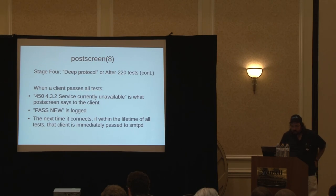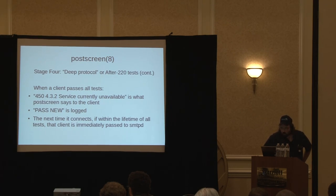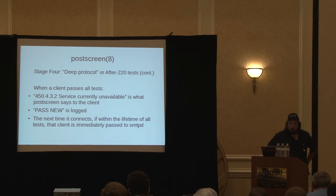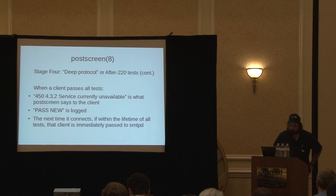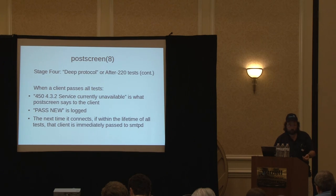When a client passes all the tests it's been speaking to the PostScreen daemon, it'll be logged as 'service currently unavailable' with a 450 SMTP code and a 4.3.2 DSN, and it also logs 'pass new' — meaning it was not currently in the cache map and will be added with all tests passed. It was not blocked by the DNSBL scoring and passed all after-220 tests. The next time it comes in, it goes directly to an SMTP daemon.